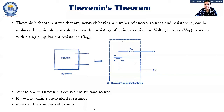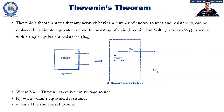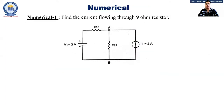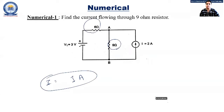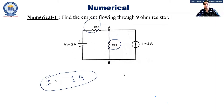Reconnecting after the session break — as we were discussing the theorems, the current flowing through the 9-ohm resistor was found to be 1 ampere. Now let us start with the next theorem: Thevenin's Theorem.